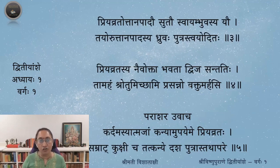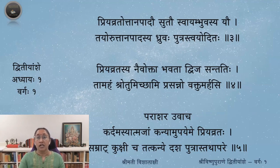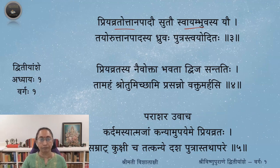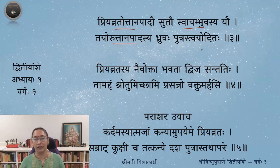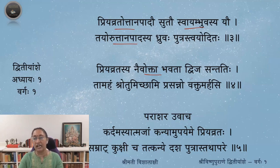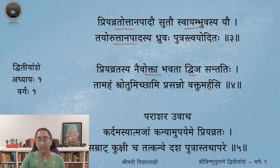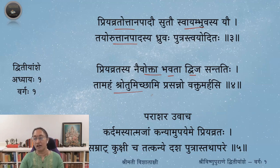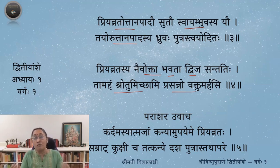What is the section Maitreya wants to know? Swayambhuva Manu had two children: Priyavrata and Uttanapada. You talked about Dhruva, who was the son of Uttanapada. But you did not speak about Priyavrata's vamsha. 'Priyavrata Sya Santatihi Naiva Ukta Bhavata. Tam Aham Shrotum Ichchami. Prasanno Bhutva Vaktum Arhasi — Be pleased and tell me; you are the fit person to answer me.'